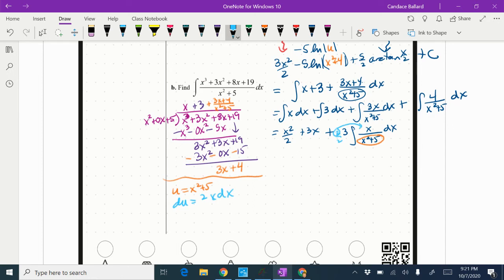I'm going to take that 2 and move it inside. So I'm going to rewrite a little bit. So we have 3 over 2 the integral of 2x over x squared plus 5 dx.